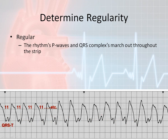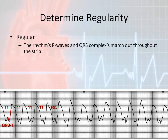This is another example of a regular rhythm. You have to actually find your start point and where you're going. In this case, this is your QRS, which is kind of odd, and then this is your T wave. You can start here and go to here and here, and what you end up with is eleven boxes here, eleven boxes here, eleven boxes here. As you go across, all of these are going to turn out to be eleven boxes.